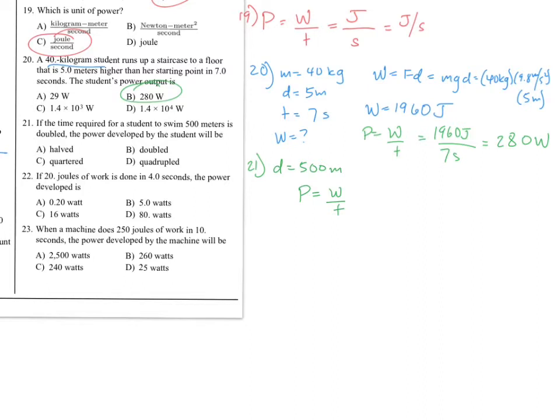If someone swam a race slower or doubled the time as someone normally does, then what do you think? It's gonna have less power. So if you have time here in the denominator. So if you increase the time, if you double it, then the power is gonna be the opposite. It's gonna be halved. Right here. Choice A.